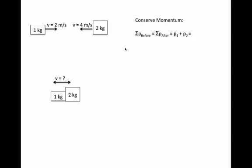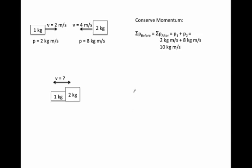The total momentum before must equal the total momentum after. Momentum is mass times velocity, so we have 2 kilogram meters per second and 8 kilogram meters per second. But we made a mistake — momentum is a vector. Defining positive to the right, one cart is at minus 4 meters per second, giving minus 8 kilogram meters per second. So the total momentum is actually negative 6 kilogram meters per second.